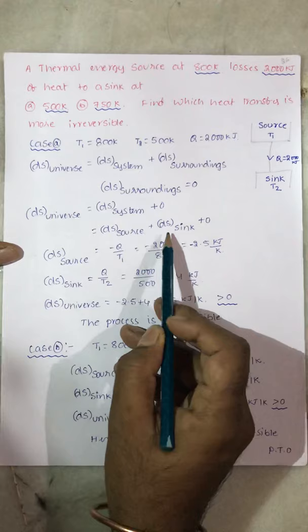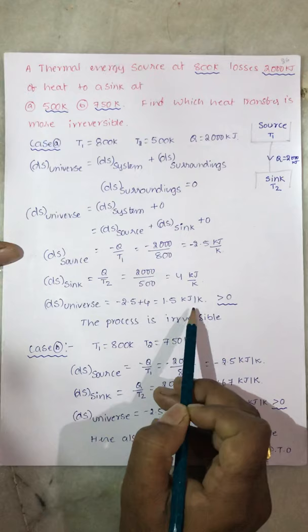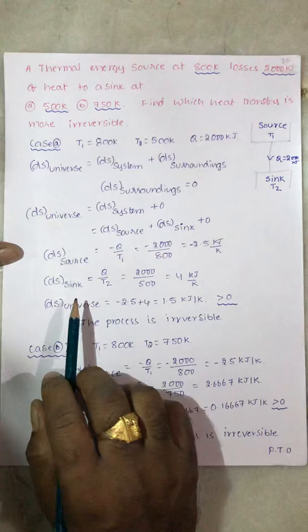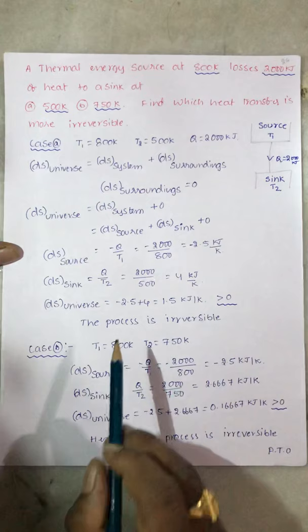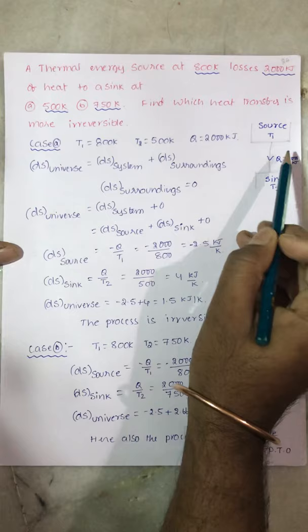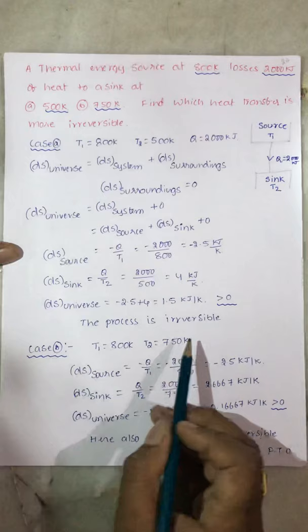DS of universe equals DS of source plus DS of sink: minus 2.5 plus 4 equals 1.5 kJ per Kelvin. The change in entropy of the universe is always greater than zero. Greater than zero means an irreversible process. So transferring 2000 kJ of heat from 800K to 500K is an irreversible process.